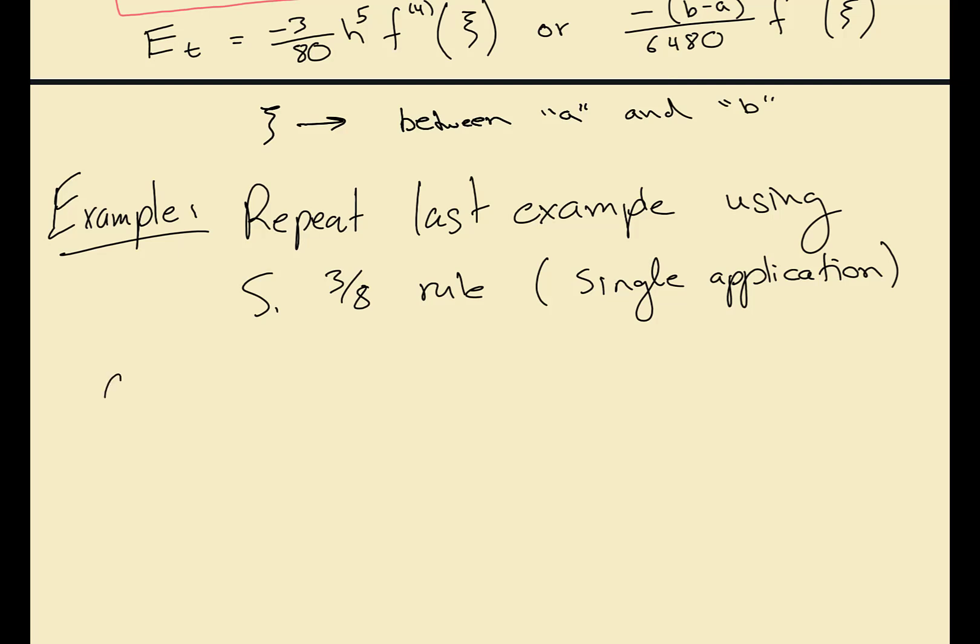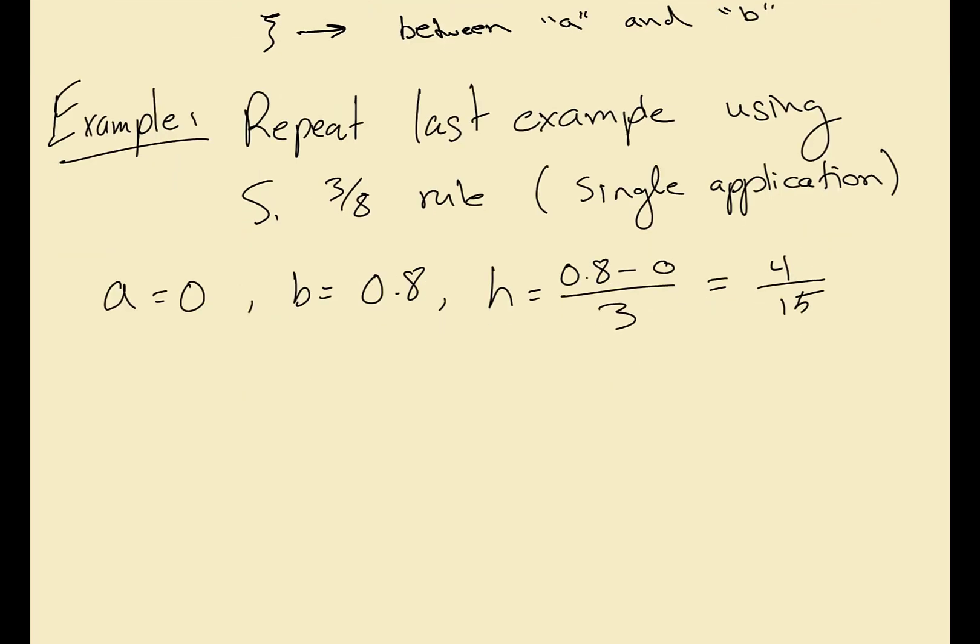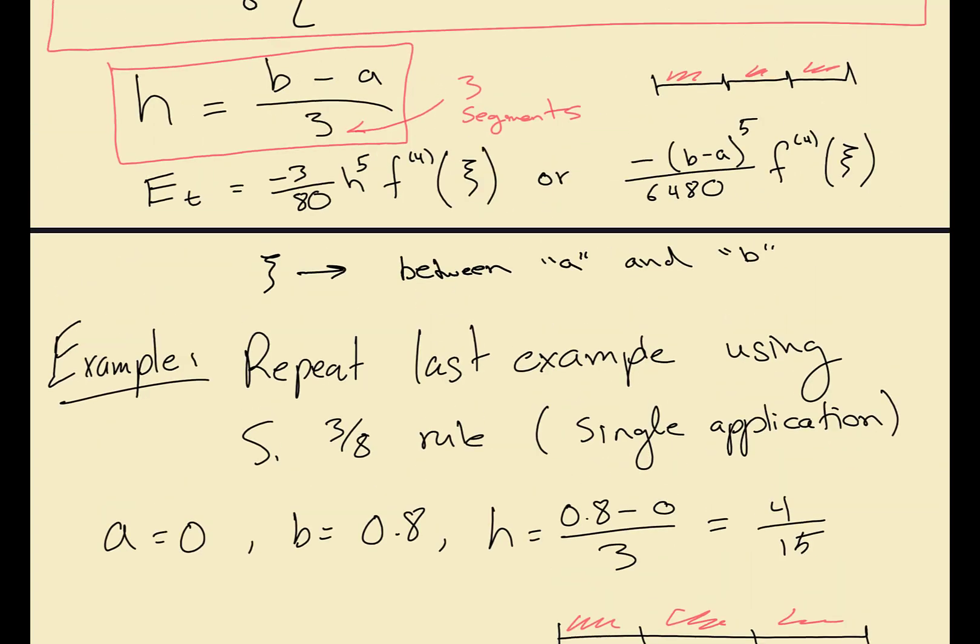If you recall, the starting point was zero, the ending point was 0.8, so that means our step size is going to be 0.8 minus 0 divided by 3, so this is going to equal 4 over 15. If you wanted to look at the points that we have here, so we have four points: first one is zero, the last one is 0.8, and then the first one over 4 over 15 and then next one 8 over 15. So again just highlighting we have three segments.